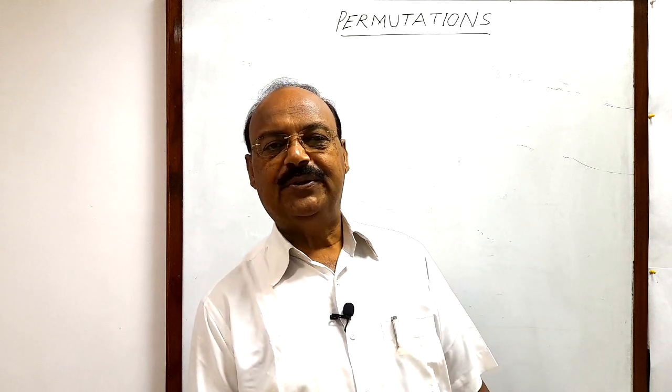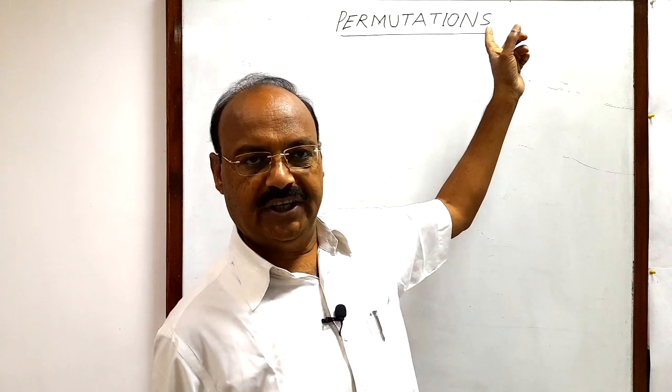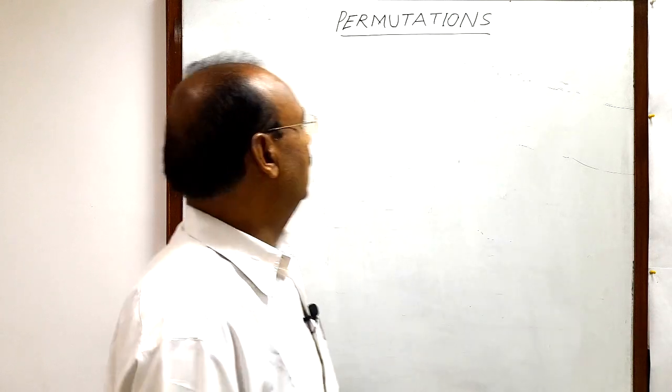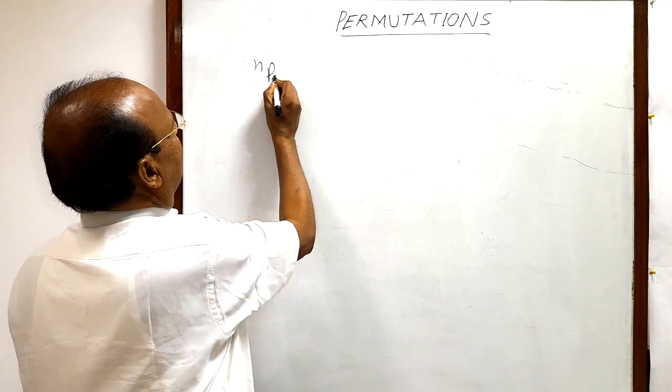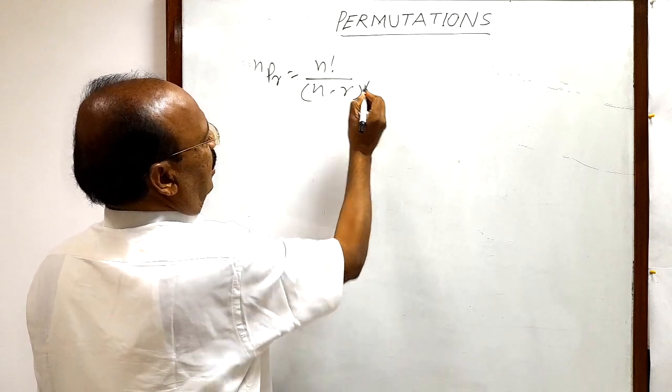Welcome students. In the previous video we have already discussed the introduction of permutation and we have seen the formula NPR is equal to N factorial by N minus R factorial.